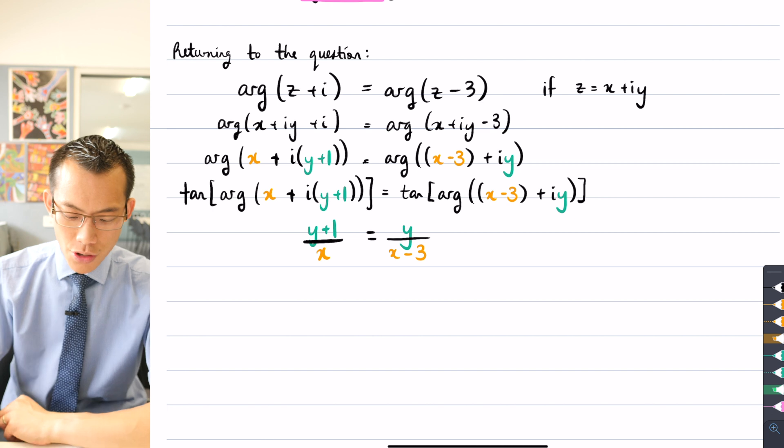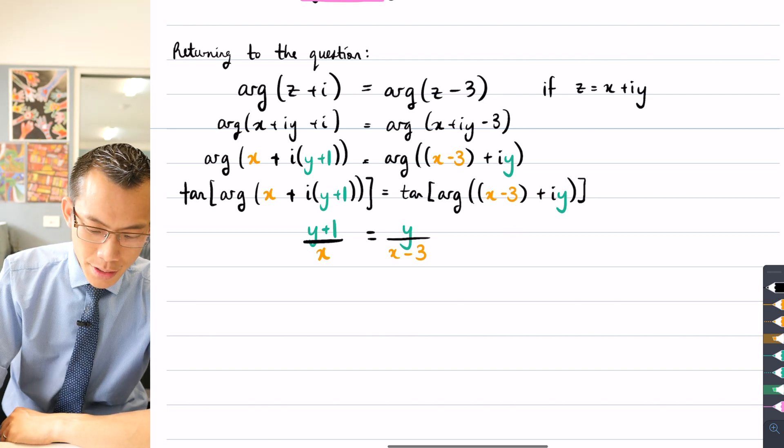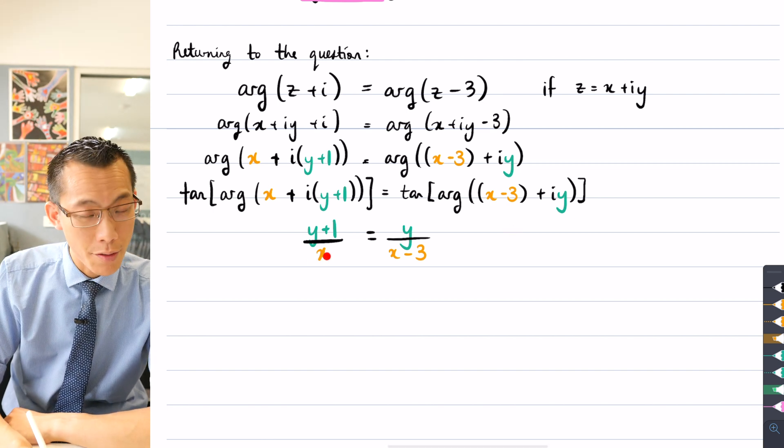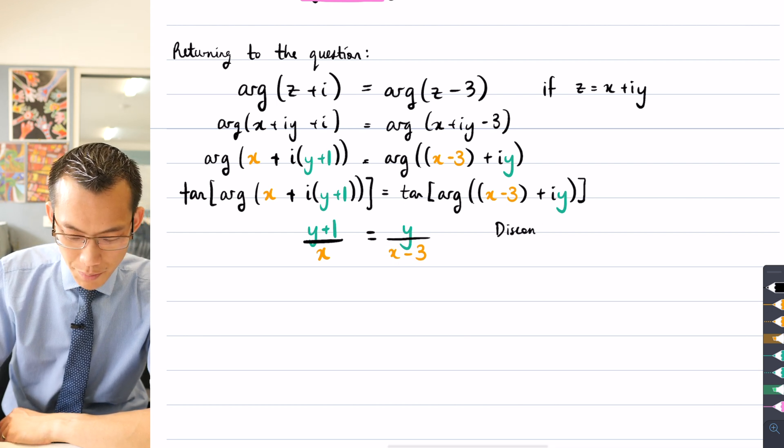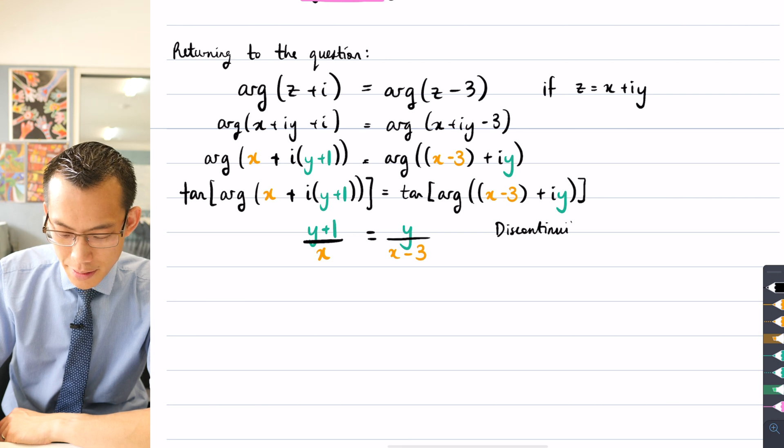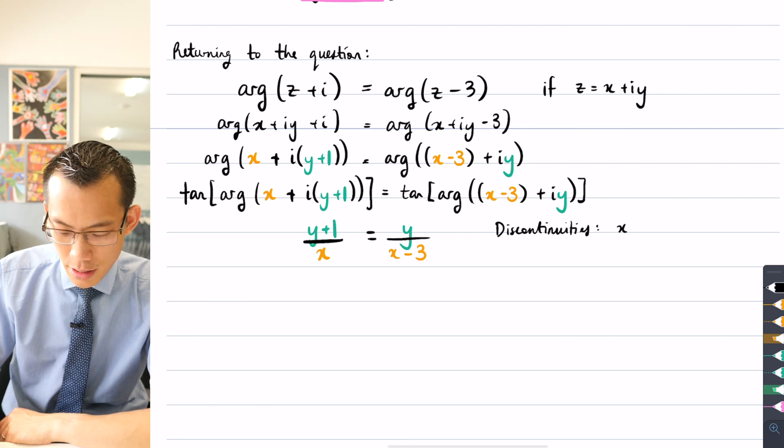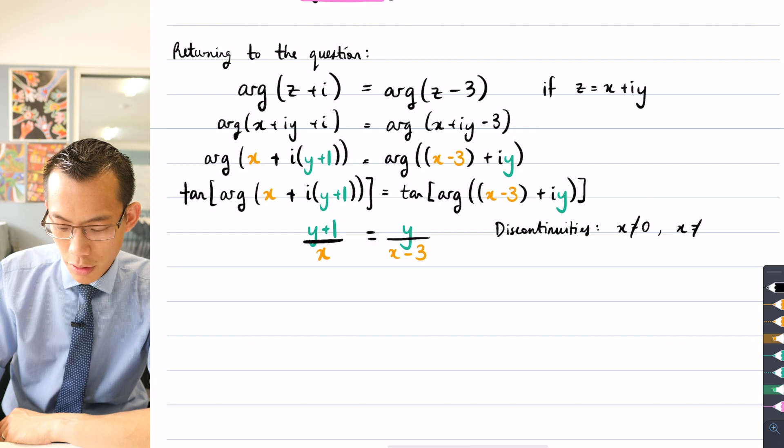If you have a look at the denominators, you can see x can't be 0 from this, and x can't be 3 from this. So the discontinuities that I notice are that x can't equal 0 and x can't equal 3.